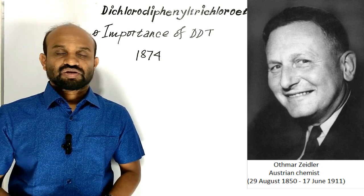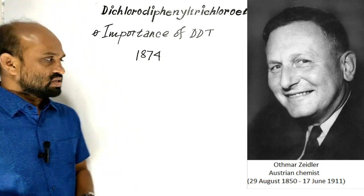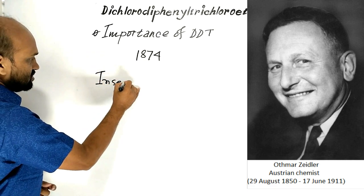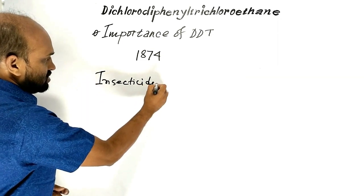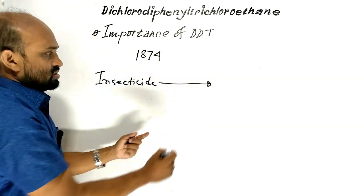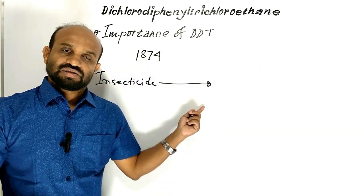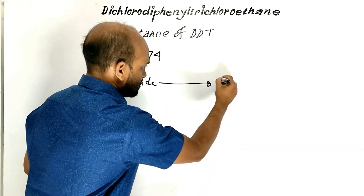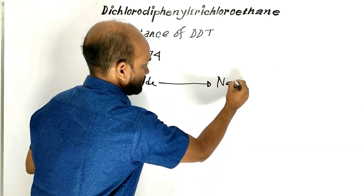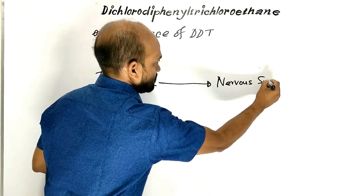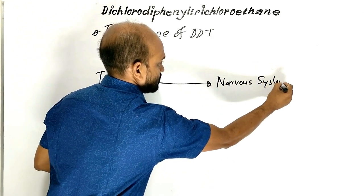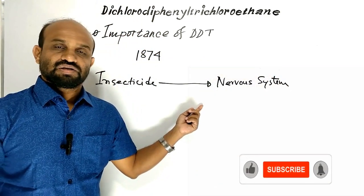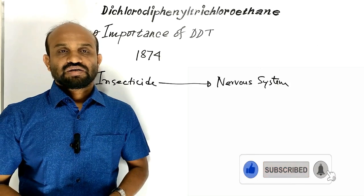What is the importance of DDT? DDT is used as an insecticide that kills insects by disrupting their nervous system. So DDT is used to kill insects.